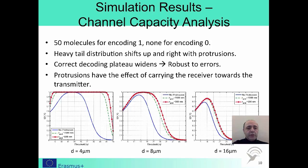Now let's look at what happens to channel capacity. We modulate binary one using 50 molecules and binary zero by not sending anything. The blue curve represents the regular case without protrusions, the green curve is for the thick protrusions, and the red curve is for the thin protrusions. We observe that utilizing protrusions provides a wide plateau for correct decoding, so you have a better chance of picking the optimal threshold and therefore being robust to errors. As the distance between the transmitter and receiver increases, the benefit of protrusions decreases, but it's still much better than not using protrusions at all. This is a result of protrusions having the effect of carrying the receiver towards the transmitter.